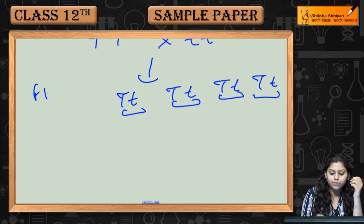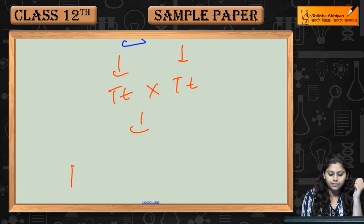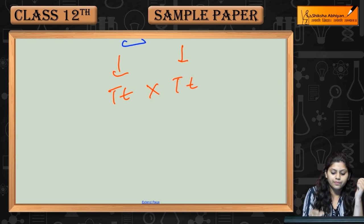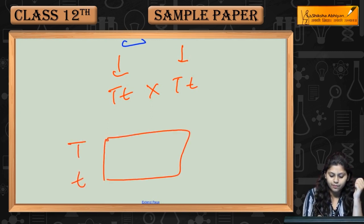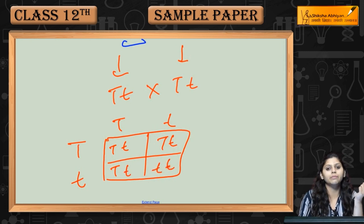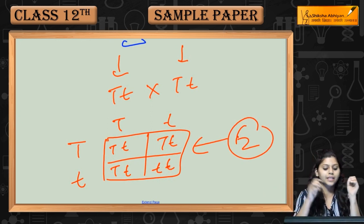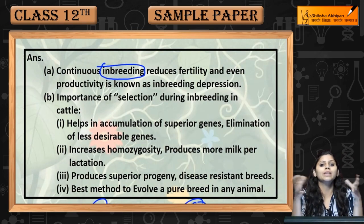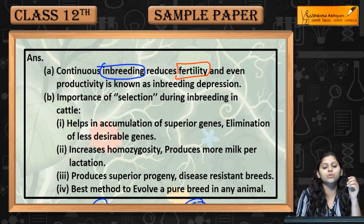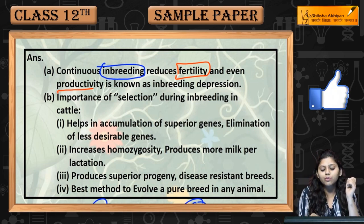If we cross these related individuals — siblings, meaning brother and sister cross — this is the F2 generation. So within-family inbreeding, that is inbreeding. If continuous inbreeding happens, family inbreeding happens, it will reduce fertility and productivity. We call this inbreeding depression — depression is related to a decrease.